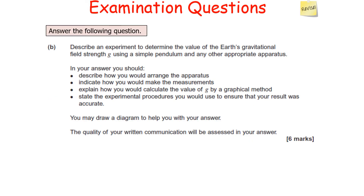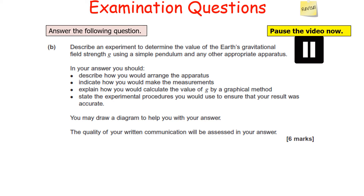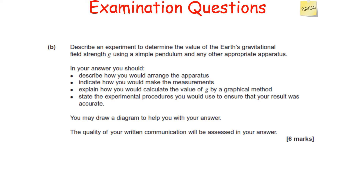Next question: describe an experiment to determine the value of the Earth's gravitational field strength g using a simple pendulum and any other appropriate apparatus. You should describe how you arrange the apparatus, indicate how you would make the measurements, explain how to calculate g by a graphical method, and state the experimental procedure to ensure an accurate result. Make sure you answer every single bullet point in a logical order — a high-quality answer is clearly organised, coherent, and logical.